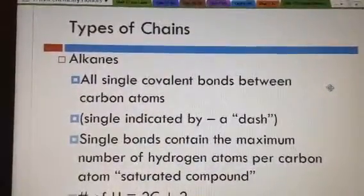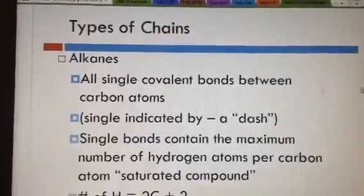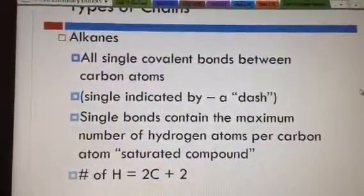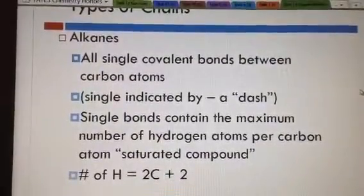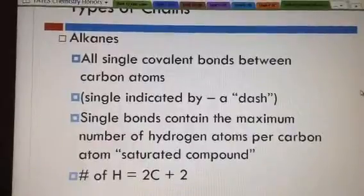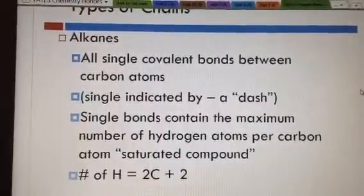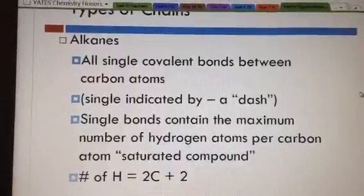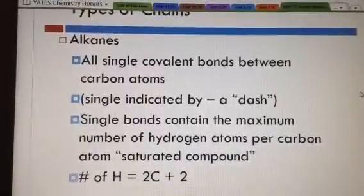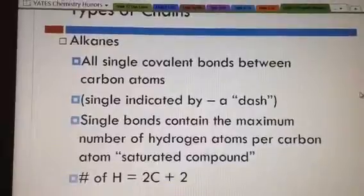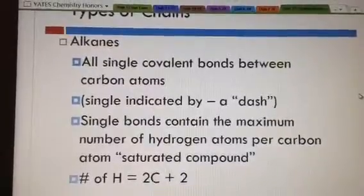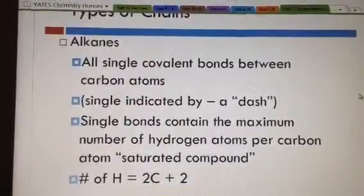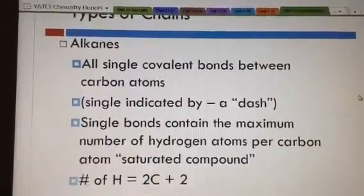The basic kind of chain is called an alkane. And that is when you have a single bond between carbon atoms. And a single bond is indicated by a dash line. You can tell how many hydrogens you have by doing a formula of the number of hydrogens is two times the number of carbons plus two. Because it's two for each of them and then I call them the end caps, the one on either side.